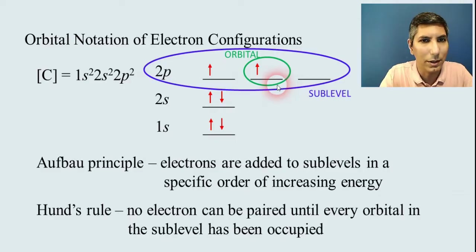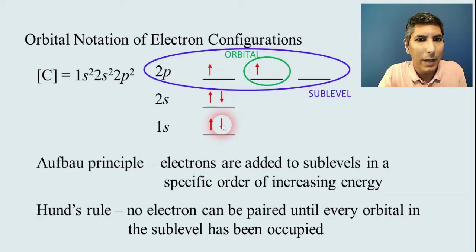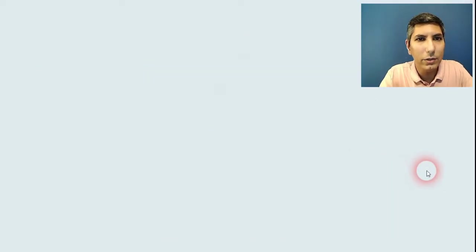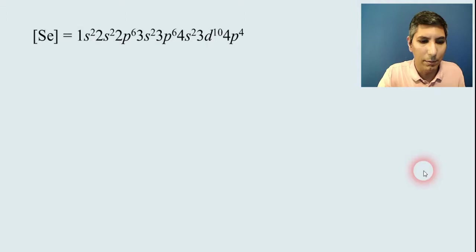Now within each sublevel, we have each individual line. Each line represents an orbital, and we'll talk about what an orbital is here shortly. So orbitals are like this, and so we would have, you know, each 2p sublevel would have three orbitals represented. In this one, only two of those orbitals are occupied. This last one of course is empty.